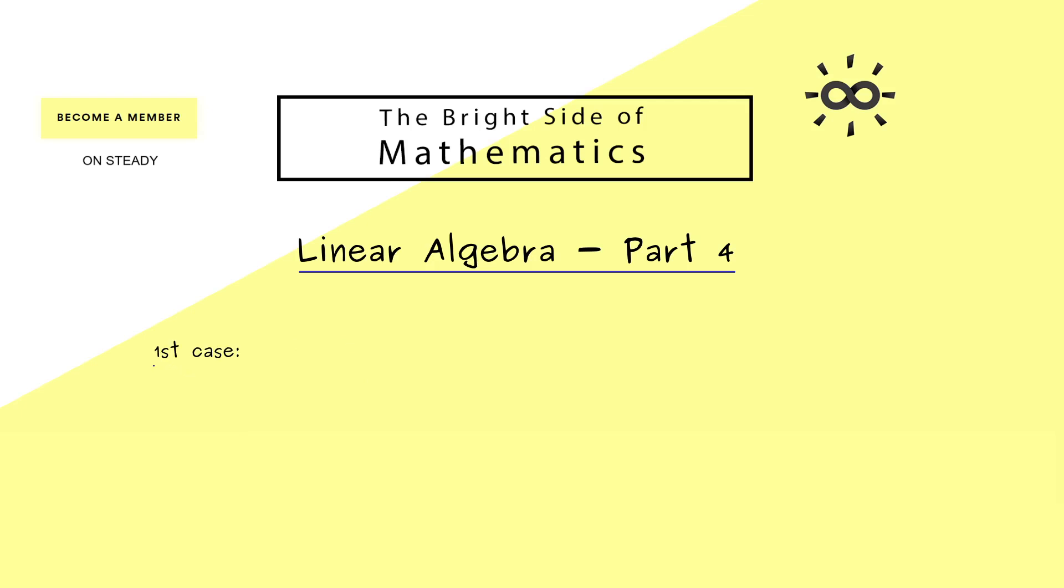Therefore let's immediately start with the first case for a line in the plane which would be a line through the origin. And maybe from now on let's call the line capital L. Of course the visualization is very simple here we have the plane and here we have a line.